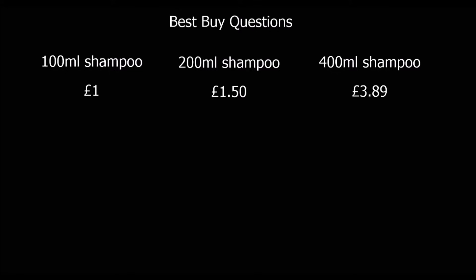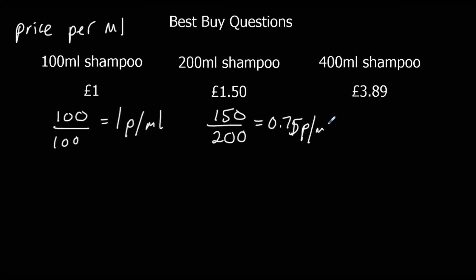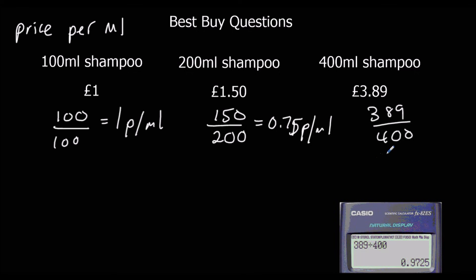Here we've got another very similar example — this time it's shampoo. So instead of price per gram, we're going to do price per milliliter. Per means divide, so it's price divided by milliliters. 100p divided by 100ml gives 1p per milliliter. 150p divided by 200ml gives 0.75 pence per milliliter. And the third option gives 0.9725 pence per milliliter.